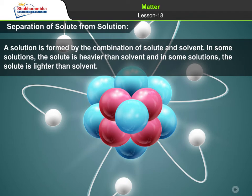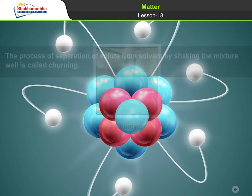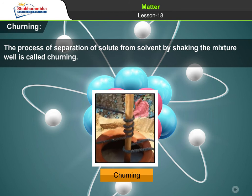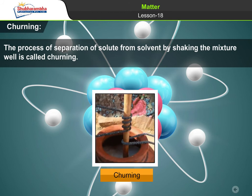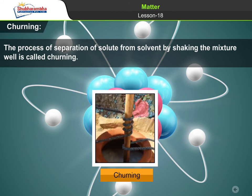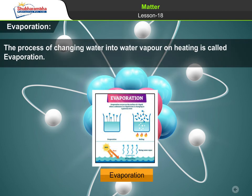Separation of solute from solution. A solution is formed by the combination of solute and solvent. In some solutions, the solute is heavier than the solvent, and in some solutions, the solute is lighter than the solvent. Churning: the process of separation of solute from solvent by shaking the mixture well is called churning. Evaporation: the process of changing water into water vapor on heating is called evaporation.